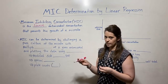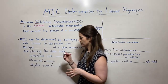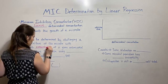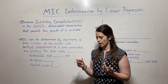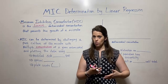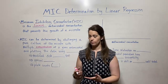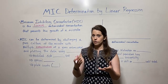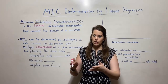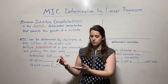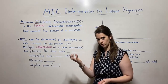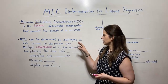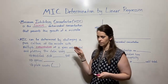The MIC can be determined by challenging a pure culture of the microbe with multiple different concentrations of a given antimicrobial compound. Let's say you've discovered a new pathogen and you want to know what the MIC of streptomycin is against that pathogen — that would be the lowest concentration of streptomycin that would prevent the growth of that microbe. Or maybe you've discovered a new antimicrobial compound and want to know how effective it is against a known pathogen like Staphylococcus aureus or E. coli. You get pure cultures of the microbe, bacterium, fungi, or whatever you're studying and challenge it with multiple concentrations of the antimicrobial compound.